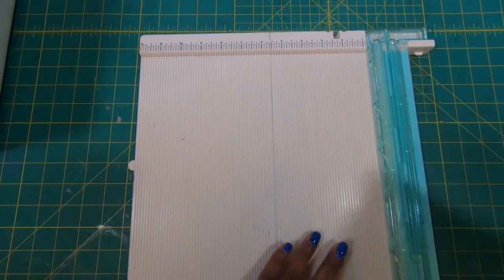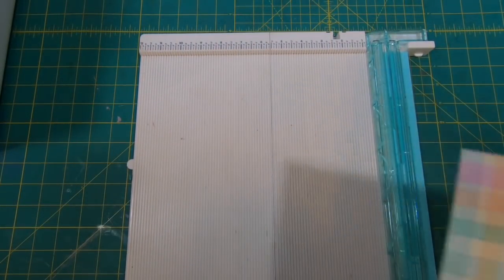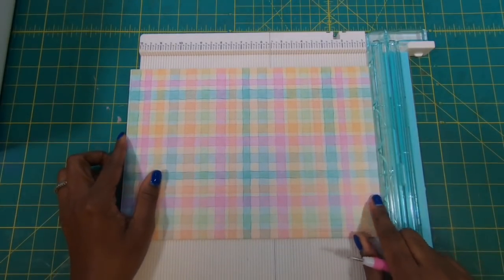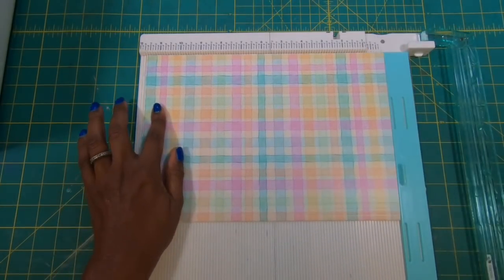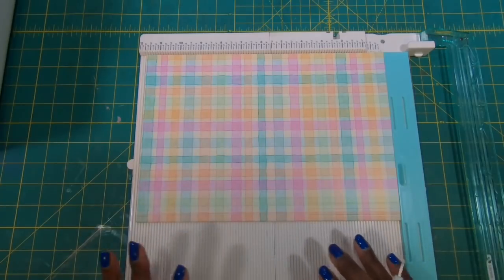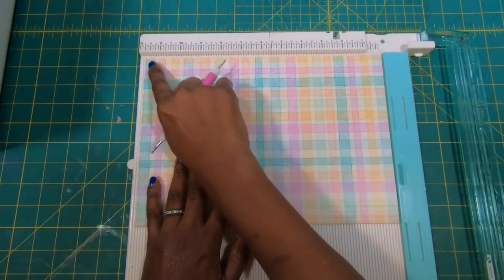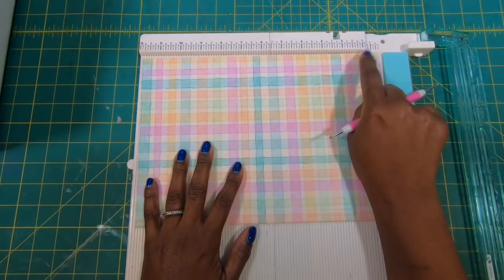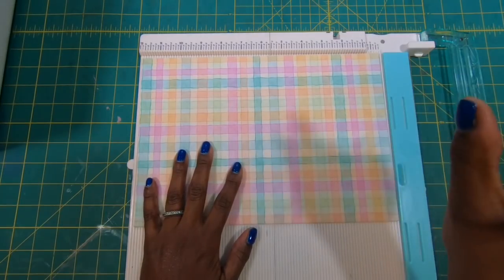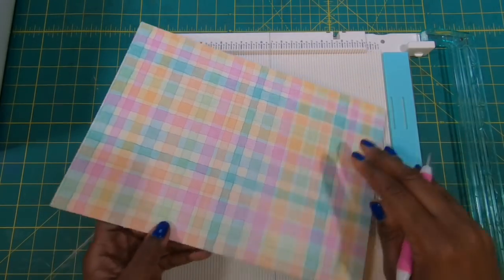So I am going to bring in my scoreboard and I have a file folder that I have cut down in size. And basically the size that you trim it down to is up to you. All I did was cut off enough at the top to take off the tab portion and I'm going to use what is left.